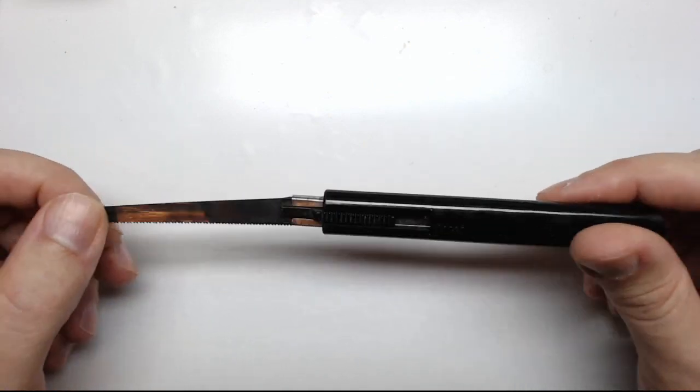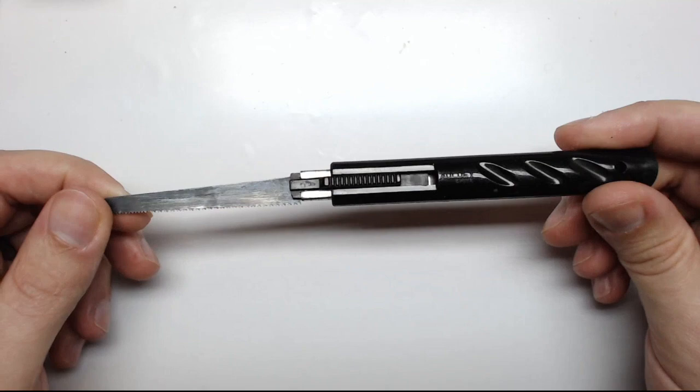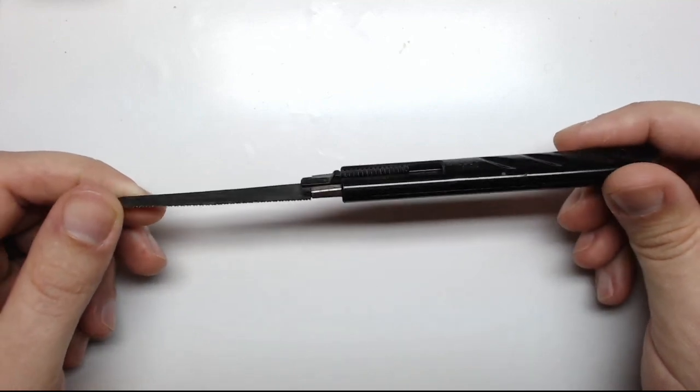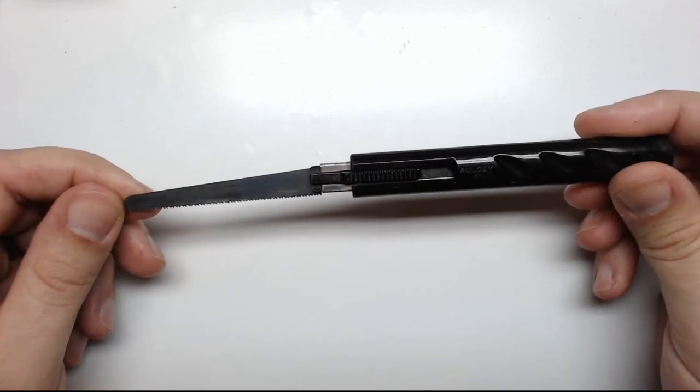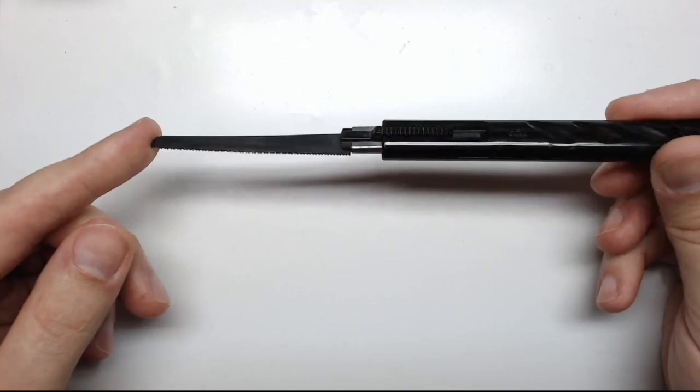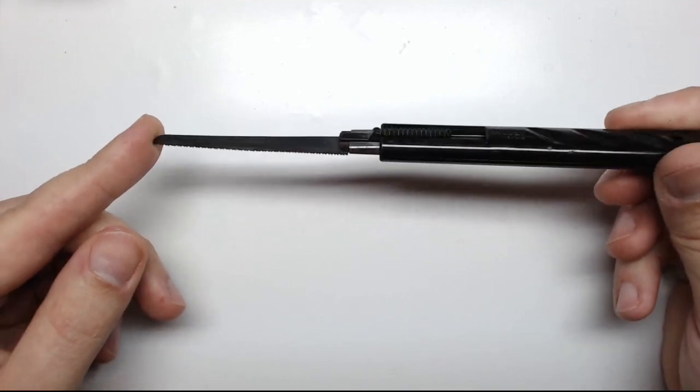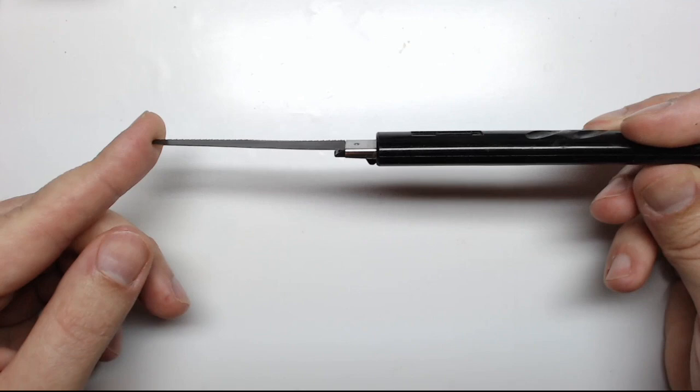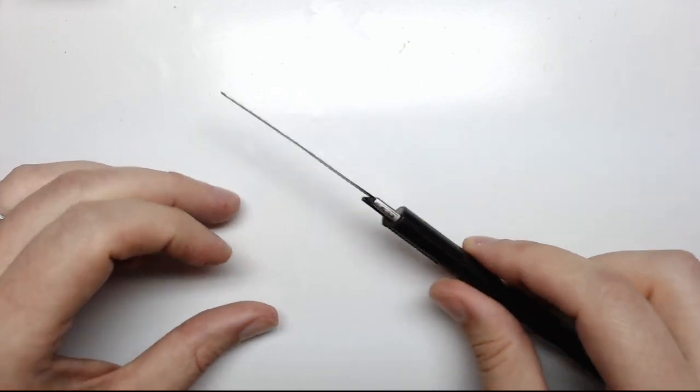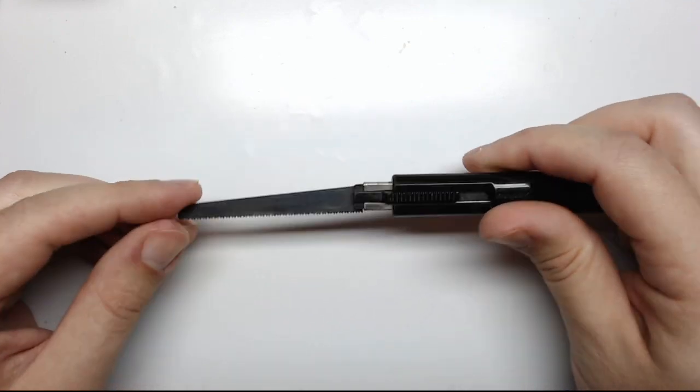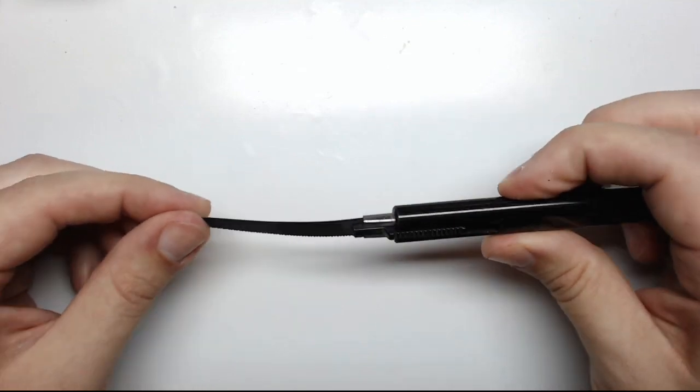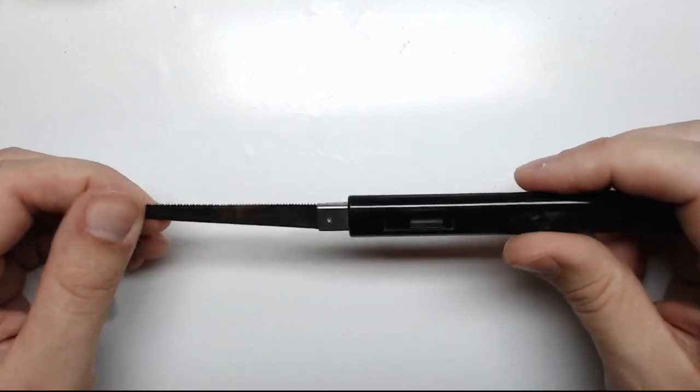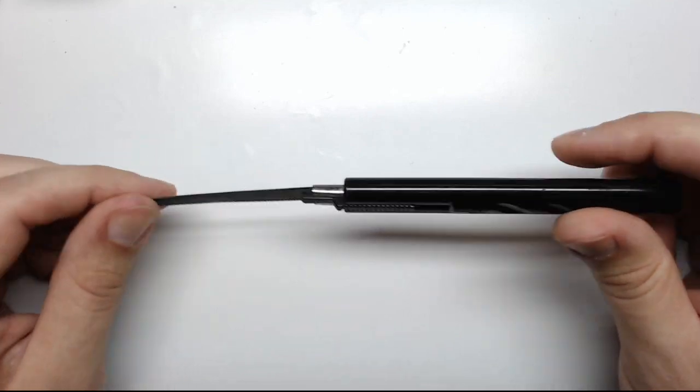I've also got this set of thin, essentially it's just a handled hacksaw. I use this for cutting metal and it's not as precise or as even as a miter box and a hobby saw but I do use it quite a bit. It's flexible so you do kind of have to be careful with that but I use this quite a bit and have severed many a limb on a metal miniature before.